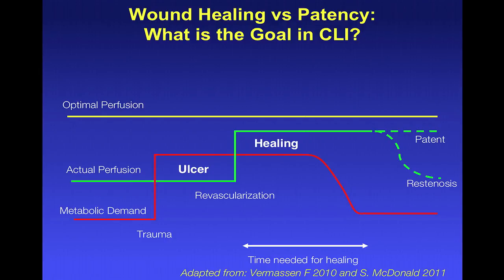When metabolic demand increases because of trauma or ulceration, actual perfusion is not enough to heal the wound. At that point, the patient undergoes revascularization, which increases perfusion above the metabolic demand and the patient heals. Once the ulcer is healing, the patient may reach restenosis, raising the question of whether long-term patency is needed in these lesions.